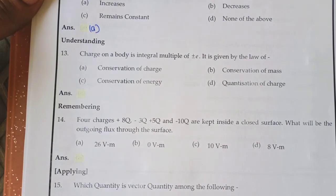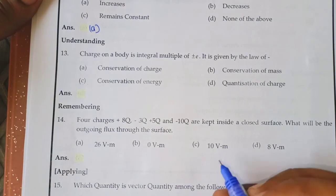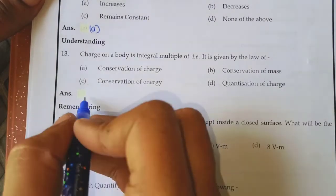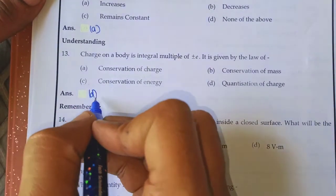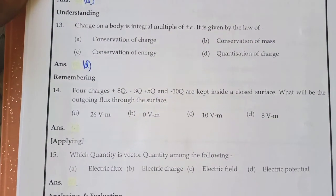Charge on a body is an integral multiple of ±e. This is given by the law of quantization of charge — answer is option D.